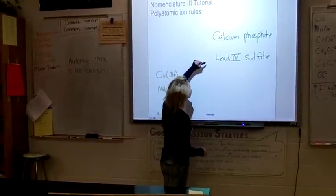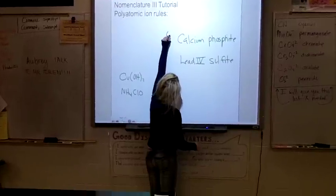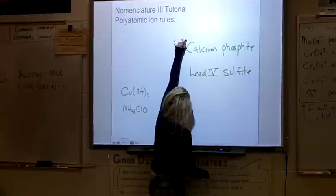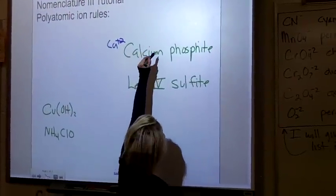Look at the periodic table to find out what the charge on calcium is. The charge on calcium is Ca+2. Then for phosphate, you know the formula for phosphate,